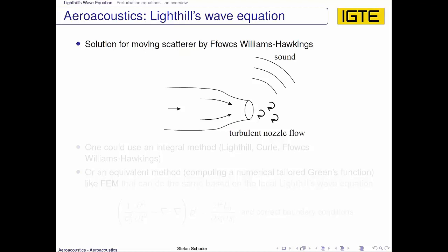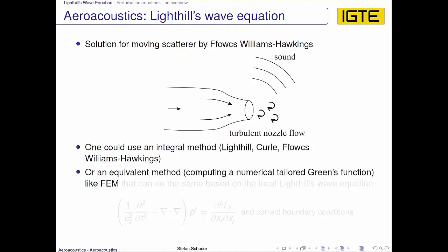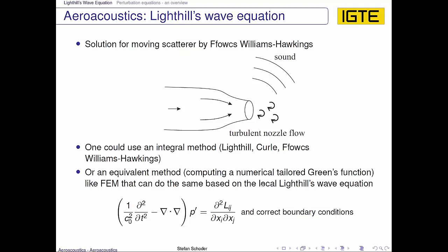one could either use an integral method for a solution, like it was derived by Lighthill, Curle, or Ffowcs Williams-Hawkins analogy, or one could use an equivalent method simply computing a numerical tailored Green's function, like when using finite element method, and use the local representation of Lighthill's wave equation, which he derived already during his derivation of Lighthill's aeroacoustic analogy.